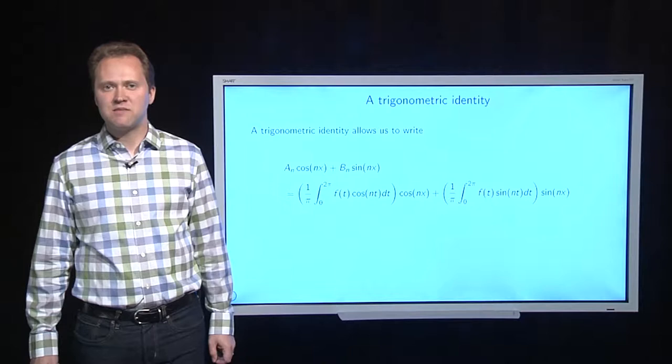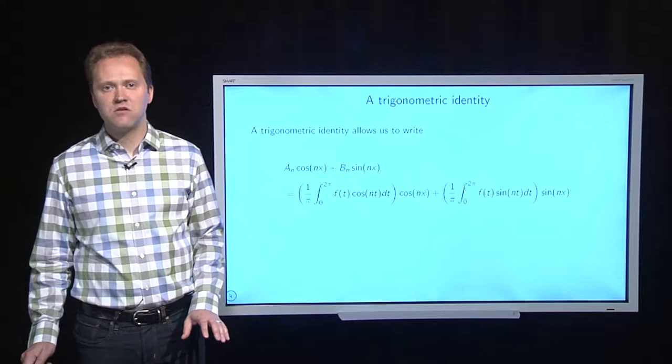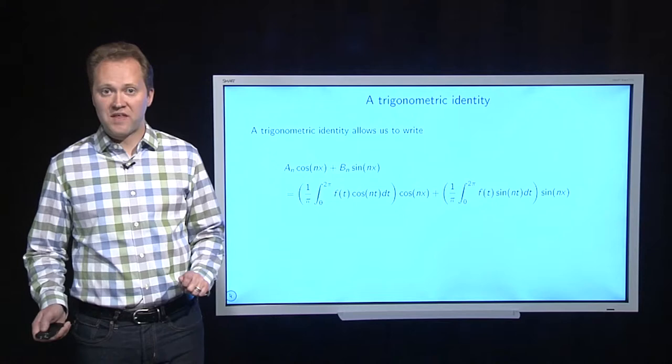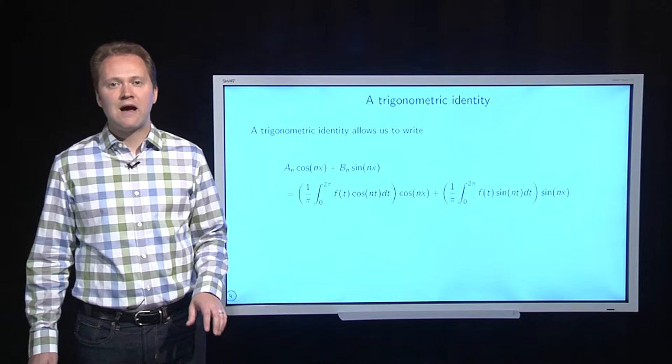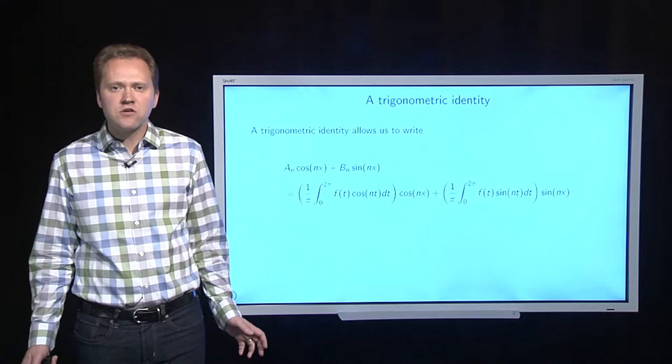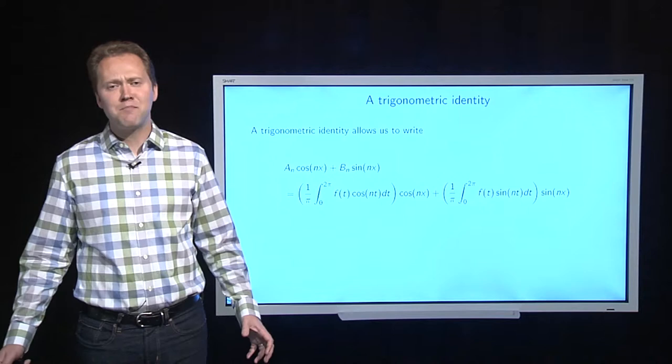Now, we make a little observation here, a simplifying observation. If you pair together a cosine and an identical sine, that is, with an identical N, well, we can write out what the coefficients are. They have very specific formulas, 1 over pi with an integral. And now, these cosines and sines that sit outside the integrals, well, they're constant with respect to the variables that you're integrating with, so they can move inside the integrals. And you can combine everything into one big integral.